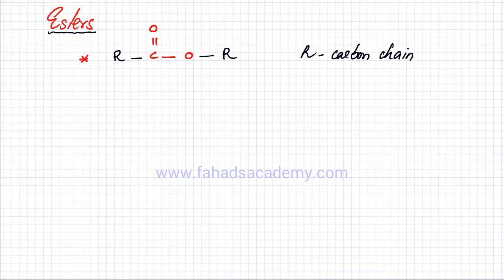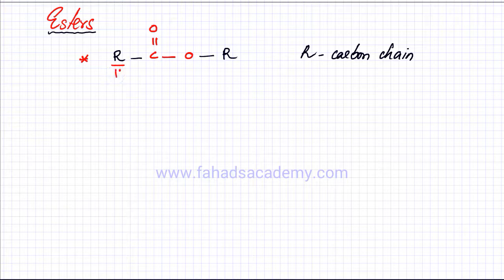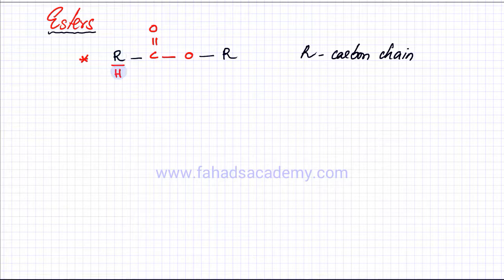One important thing to note: on the left side, R could also be a hydrogen atom, but on the right side, R must be a carbon chain. So the left side can be either a carbon chain or a hydrogen atom, but the right side must be a carbon chain.